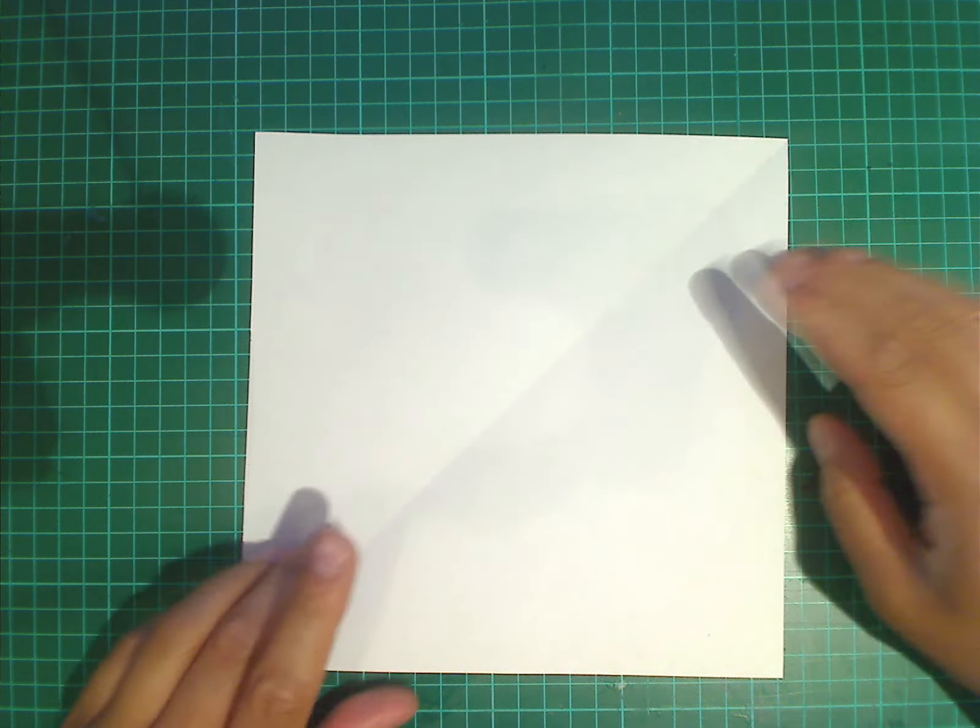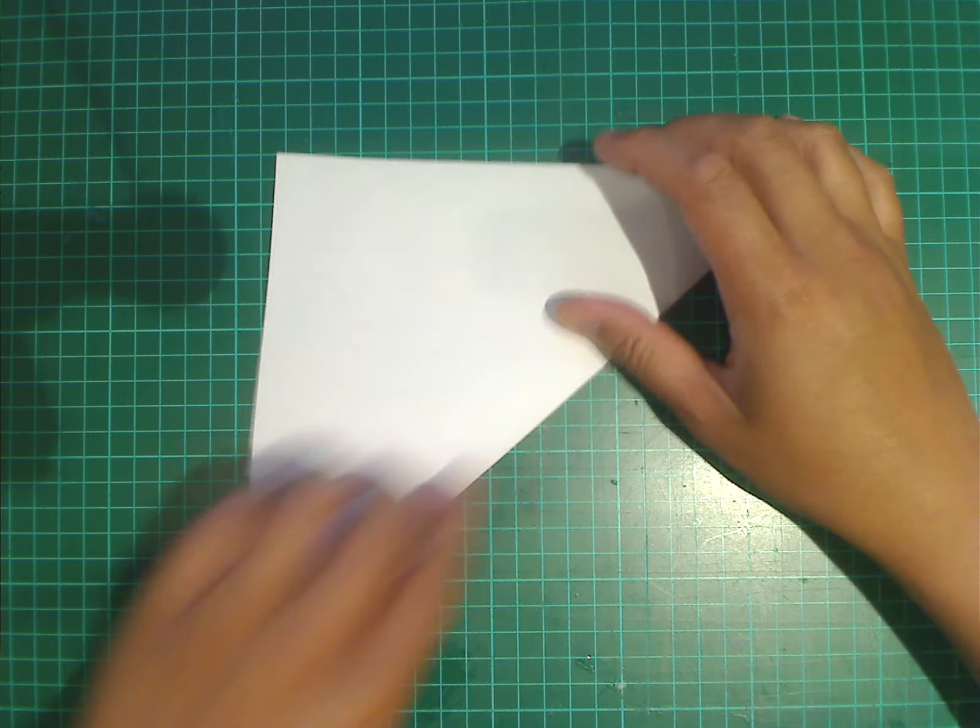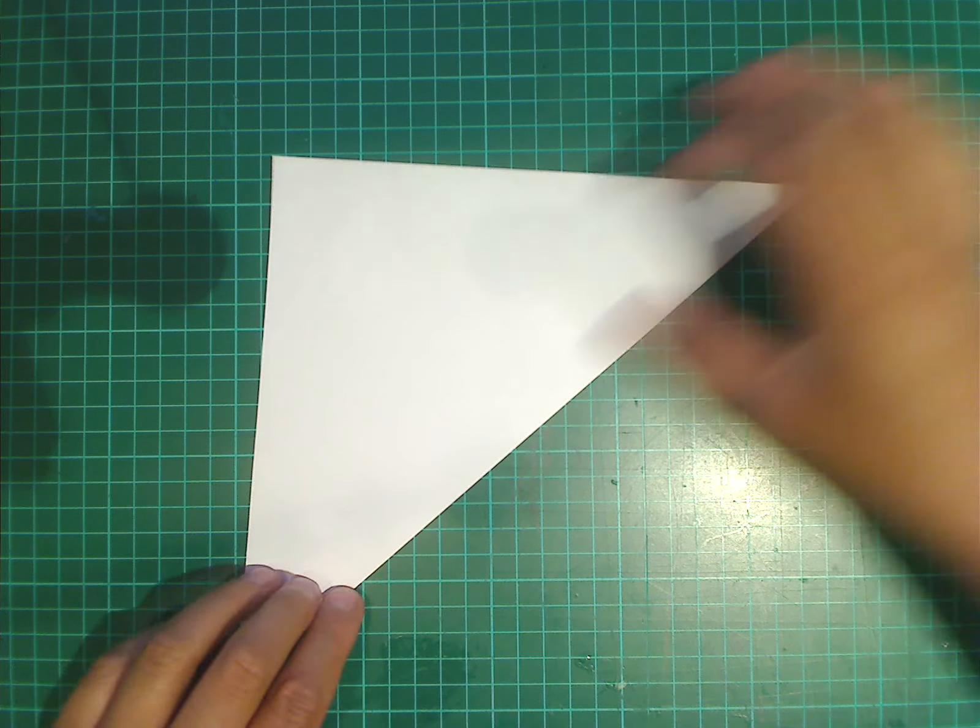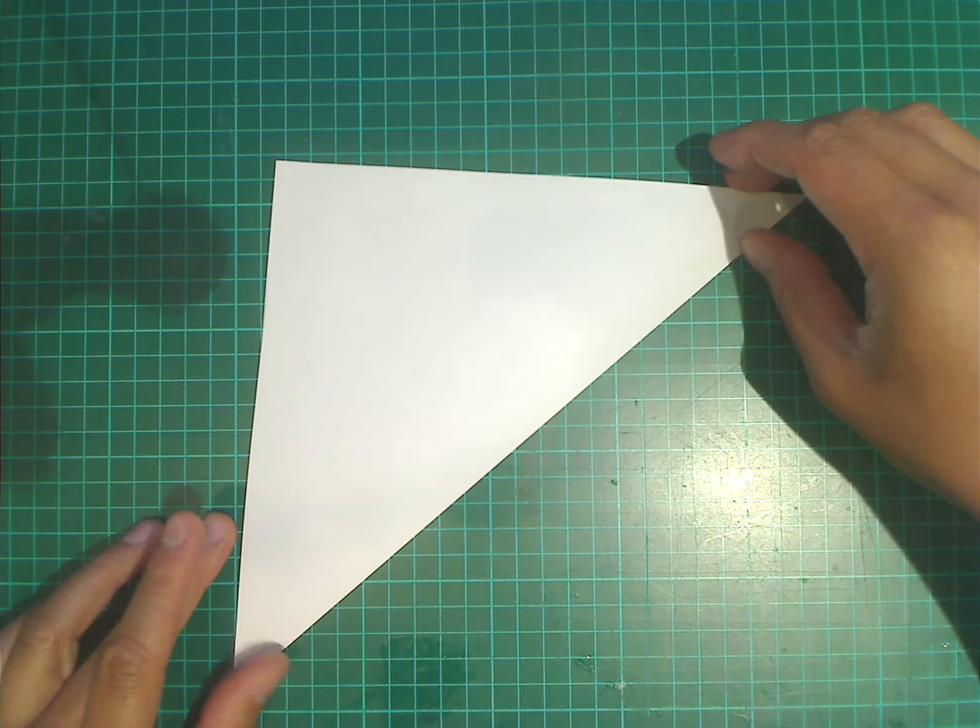My sheet's already got a diagonal crease, but we're going to repeat that crease. So make that crease there. Open it back up again.